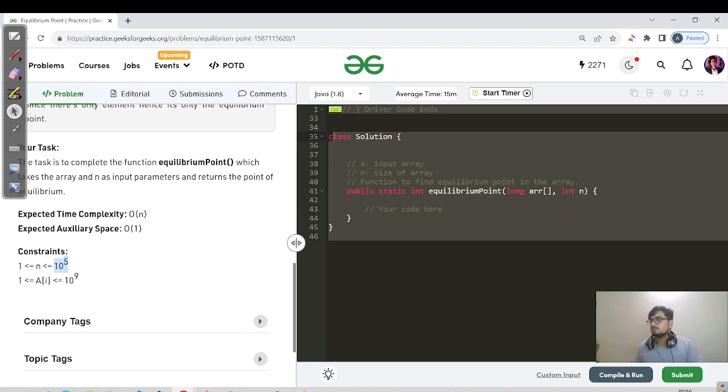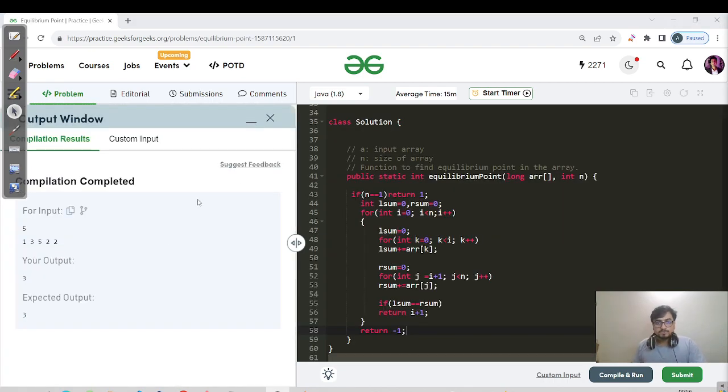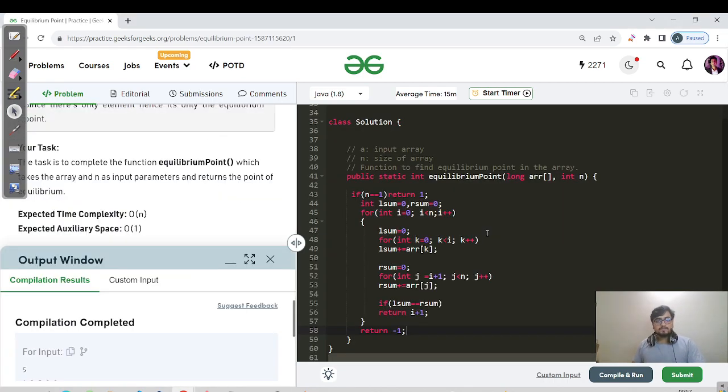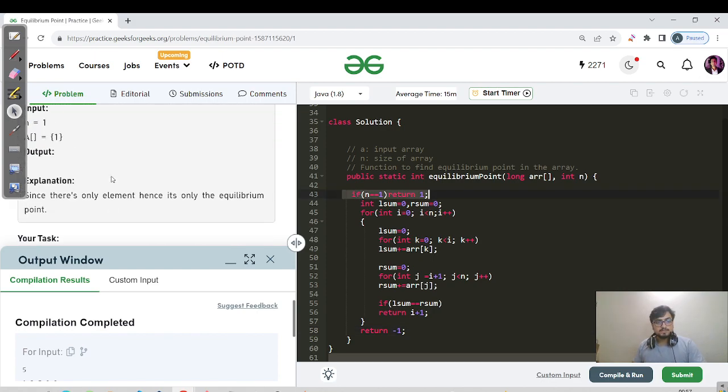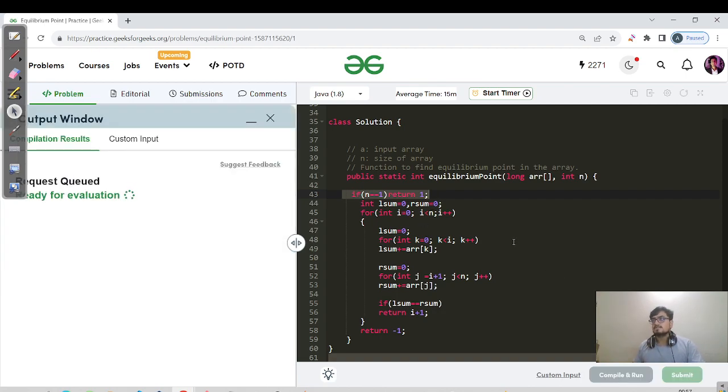So let us code that approach and then we can proceed ahead with the method 2. Okay, so that's the code here for our brute force technique. We have handled n equals 1 basically - if there's only one element it's the only equilibrium point in a given array, so that is what we have handled explicitly before the for loop. And rest things I have done the same we have discussed. Let us hit the submit button for now and let us wait for the TLE to come and then we'll be coming ahead with the method 2.